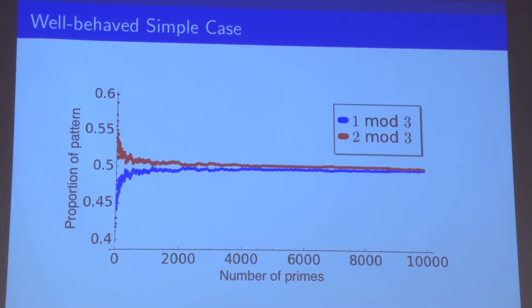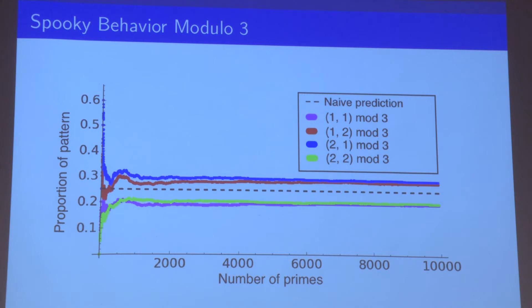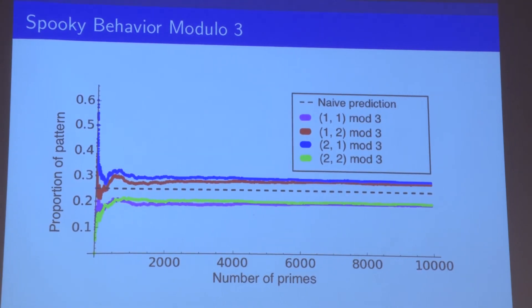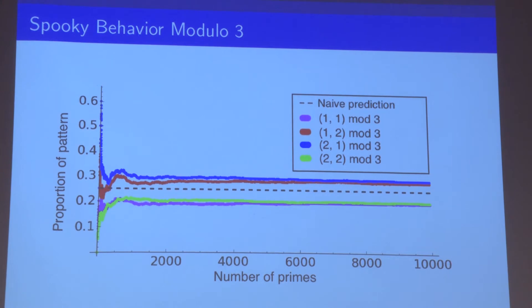But if we look at longer patterns, if we look at pairs of primes and not just one prime at a time, it turns out that there's some spooky behavior. Here, the black dashed line is what we would expect if we just generalized Dirichlet's theorem to longer prime sequences. So what I mean by that is the following. Let's look at how many possible patterns there are of pairs of primes when we take the remainders when divided by three.